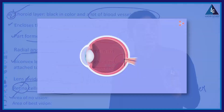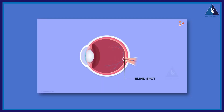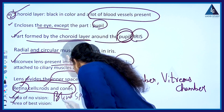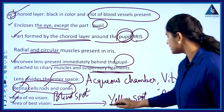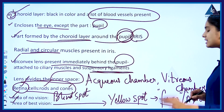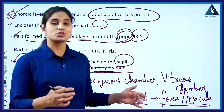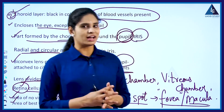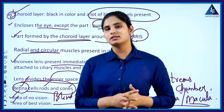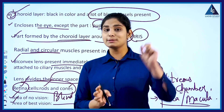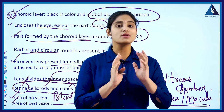There are some areas of no vision, which we call the blind spot. The area of best vision is called the yellow spot, also known as the fovea or macula. These are the different structures of the eye. Now let's understand the functions of all these parts and how they help the eye work to give us the sense of sight.